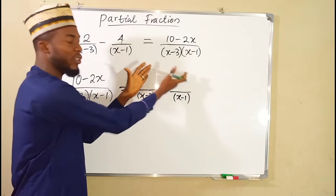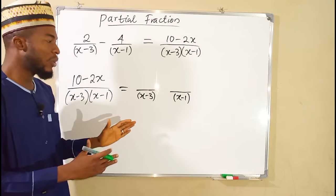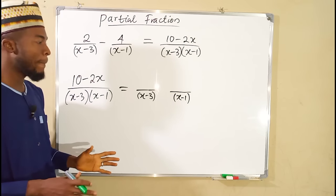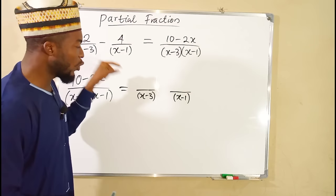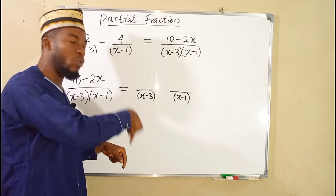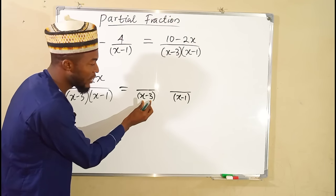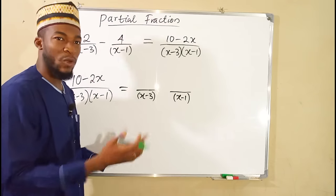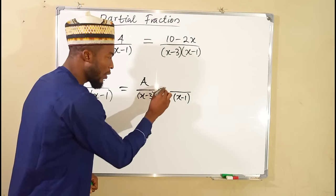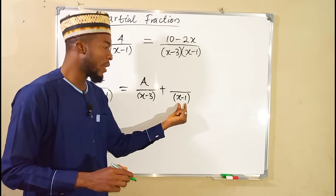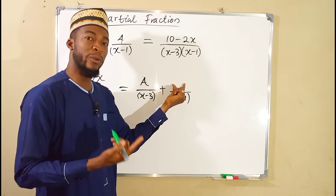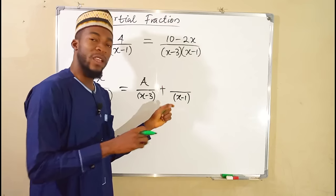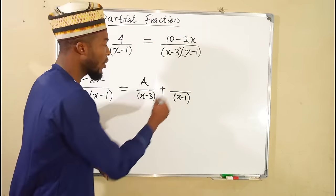To obtain their corresponding numerators, you have to examine the nature of these factors. Each of these factors are linear factors, so the numerator of each fraction is going to be a polynomial of one degree less than the denominator. The denominator is degree 1, so 1 minus 1 is 0 — hence we obtain a constant on top, which we call A. The other factor is also linear of degree 1, so similarly 1 minus 1 is 0, leaving only a constant which we call B.